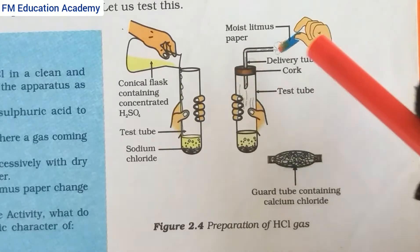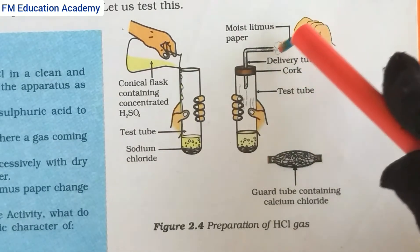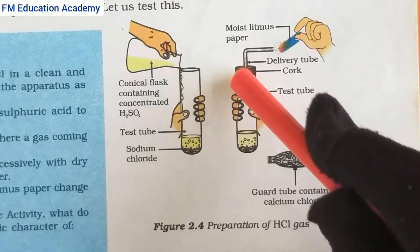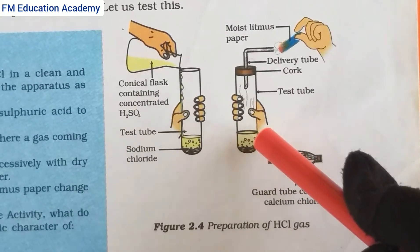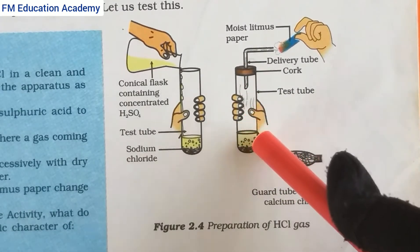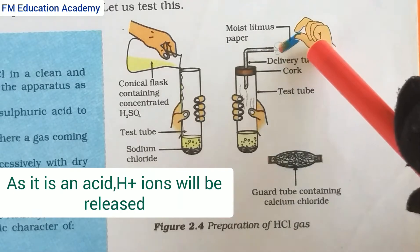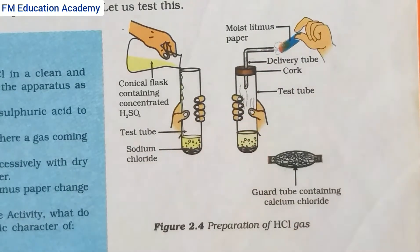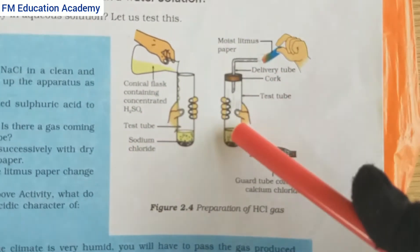In the next step, we wet the blue litmus paper and bring this moist litmus paper near the delivery tube. As soon as we do so, we observe fumes coming out of the test tube, indicating a fierce chemical reaction between the sodium chloride and the sulfuric acid. This indicates that with wet litmus paper, H+ ions are released.